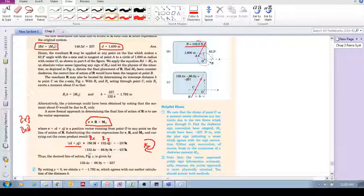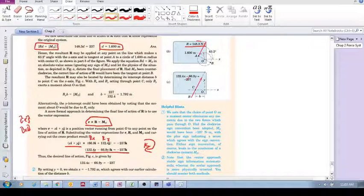And we're left with this. So 132.4x minus 66.9y is equal to minus 237. That is our equation. What does this mean?